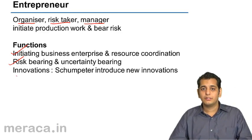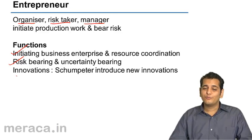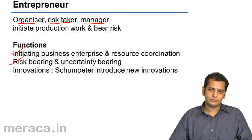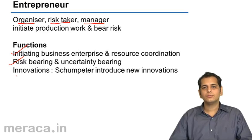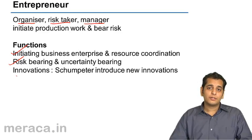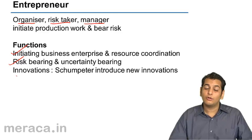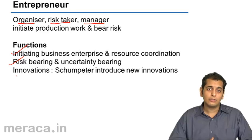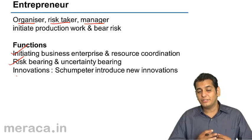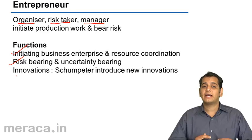The second function is risk-bearing and uncertainty-bearing. The entrepreneur takes the risk of losses, the risk of changes in fashion, and the risk of unproductive labor. Because of each of these risks, he might have to shut down, so the entrepreneur has to take care of all these uncertainties.